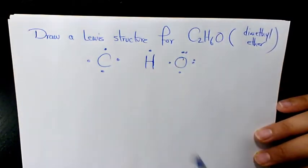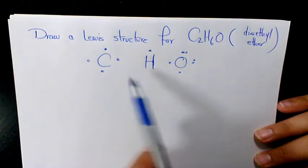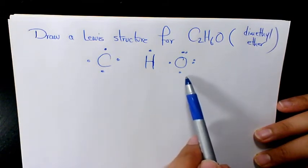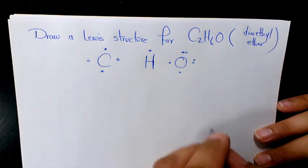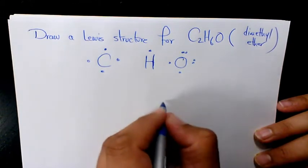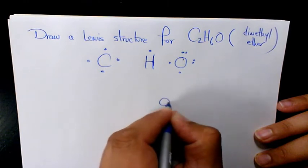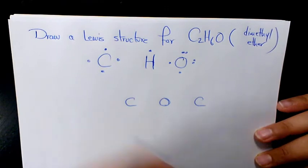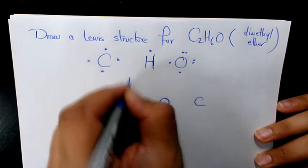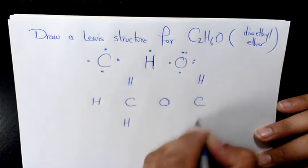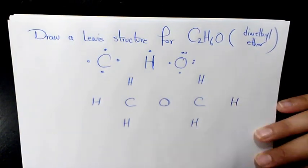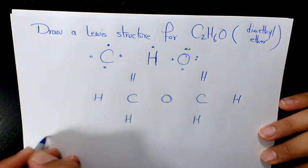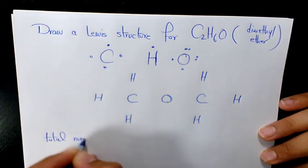The bonding capacity of carbon is four, bonding capacity of hydrogen is one, and bonding capacity of oxygen is two. So the first thing we need to do — in an ether, oxygen is going to be in between, and we surround it by carbons, and we put the six hydrogens around it like this.